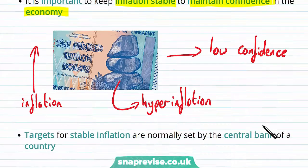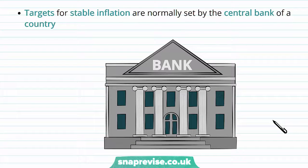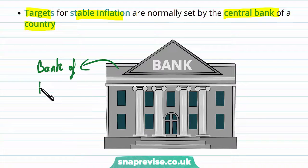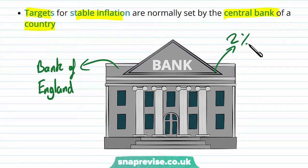We can learn about the costs of hyperinflation in other videos. The target for stable inflation is normally set by the central bank, which is an independent body. In the UK, that is the Bank of England — independent meaning they operate independently of the government, so the government can't tell the Bank of England what to do. The Bank of England sets their inflation target at 2%, which is considered a stable target.